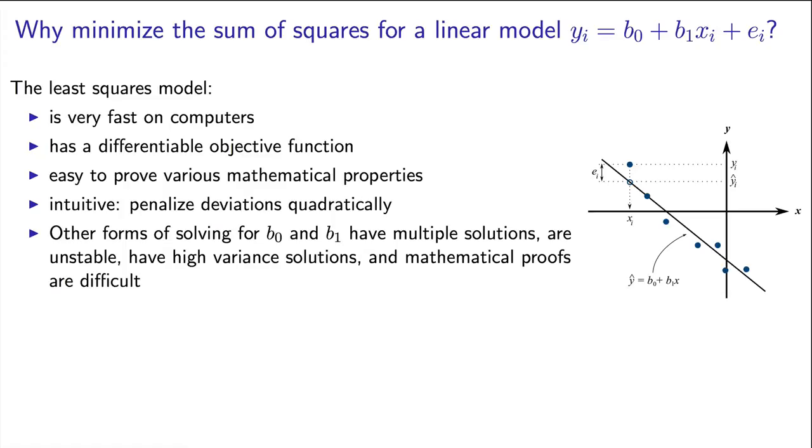The other forms of fitting the linear model potentially have multiple solutions. No one wants to get two different least squares answers from the same data set. Other methods can be unstable and sometimes not converge. And the solutions, the estimates for b0 and b1, can have high variance.